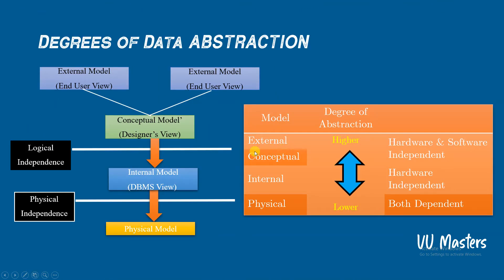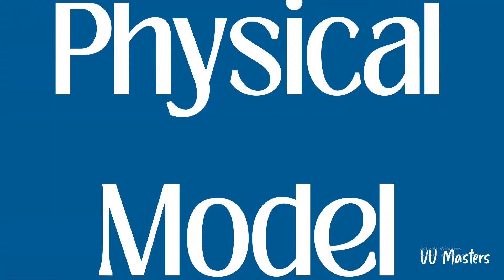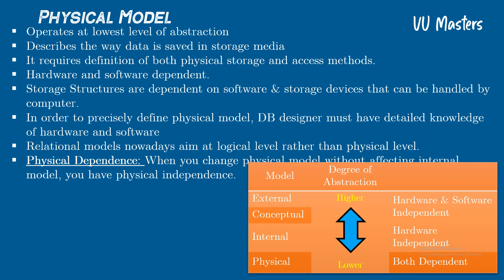The physical model is at the lowest level of abstraction. It has a lot of detail. It describes the way data is stored in storage media — whether that is magnetic, solid state, or optical storage media.